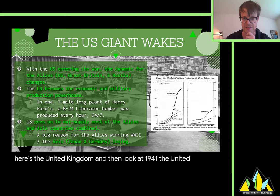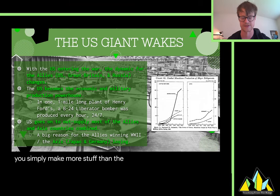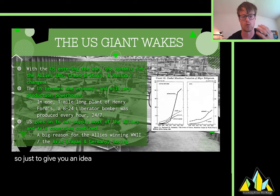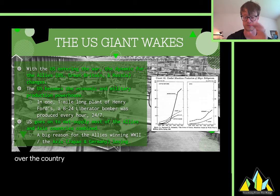There is a thought — and as a junior historian I tend to subscribe to this — that if you simply make more stuff than the other side has, even if it's not of good quality, that matters and has a lot of weight to it. This picture shows Henry Ford's car factory that has been converted into making B-24 Liberator bombers. They're making one of these every hour, 24/7, around the clock — and that's just one mile-long plant. There are hundreds of these all over the country making different things. The US making stuff here is going to be incredibly, incredibly influential.